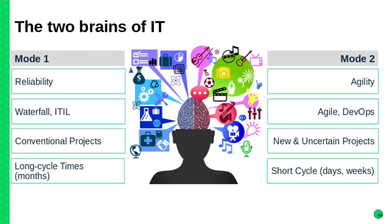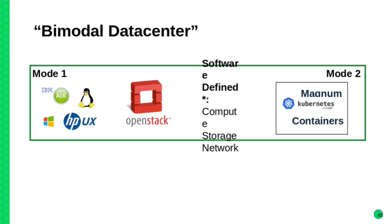Now, where are we going with this? When we re-evaluate these two brains of IT, it's clear that a lot of the workload in the future will go to different paradigms of deployment. Mode 2 is unavoidable — it's already here. But in Mode 1 we have certain tools to do our deployments. There are some things in between, and then in Mode 2 we are getting completely different tools to deploy applications.